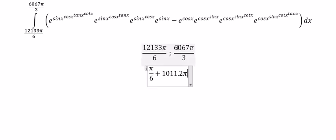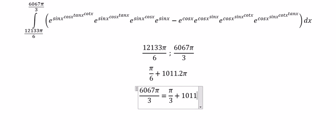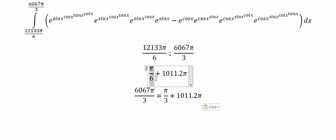Similar for this number in here. That should be equal to π over 3 plus 1011 multiplied by 2π. And we know that 2π is one circle of trigonometry, so we can simplify this into π over 6 and π over 3.